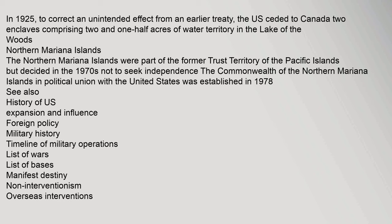In 1925, to correct an unintended effect from an earlier treaty, the U.S. ceded to Canada two enclaves comprising two and one-half acres of water territory in the Lake of the Woods. The Northern Mariana Islands, part of the former Trust Territory, decided in the 1970s not to seek independence. The Commonwealth of the Northern Mariana Islands in political union with the United States was established in 1978.